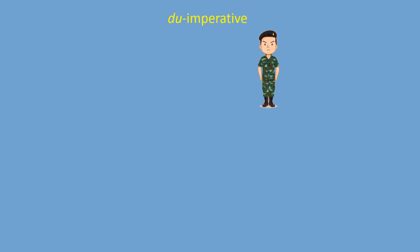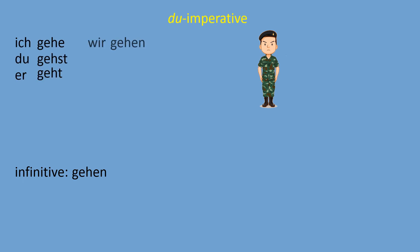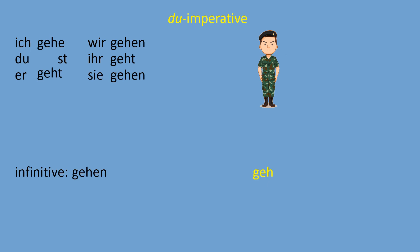Now the du-imperative — the most difficult part. For one friend using informal language, we want to say 'go.' Let's look at the conjugation again: ich gehe, du gehst, er geht, wir gehen, ihr geht, sie gehen. We look at the du-form: 'du gehst' — stem plus ending '-st.' To create the command, we take the stem and drop the '-st': 'Geh!' That short form is the command we give to our one friend.